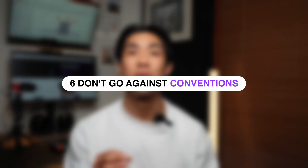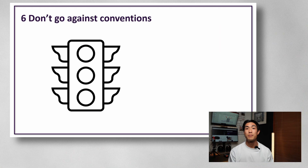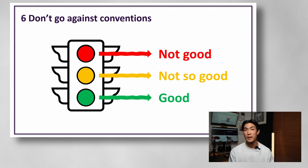Tip number six may sound like a no-brainer, but please try not to go against well-accepted conventions. Just think of how we associate blue with cold water and red with hot water. It's absolutely fine to be creative and think outside the box when it comes to visualizations, but there are certain things like green is good, amber is not so good, and red is bad, for example. If you ignore these cultural conventions, your visuals can become significantly harder to interpret, as your audience needs to actively go against their beliefs in order to agree with whatever your new convention is.